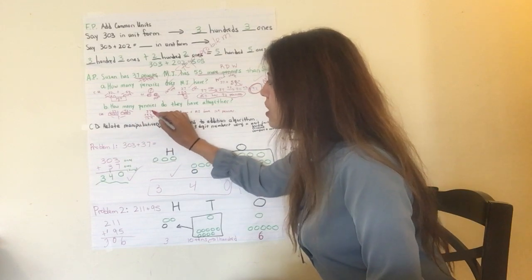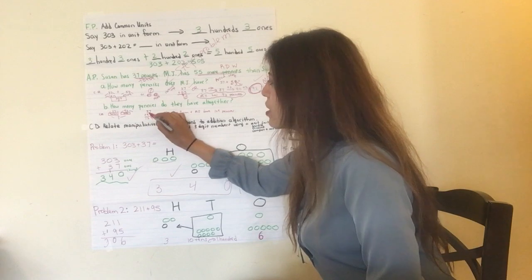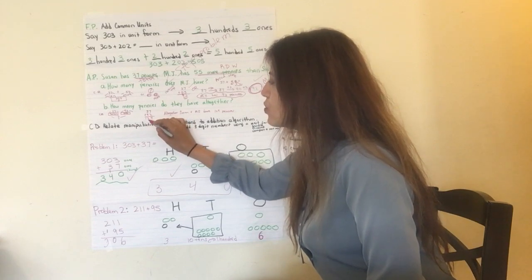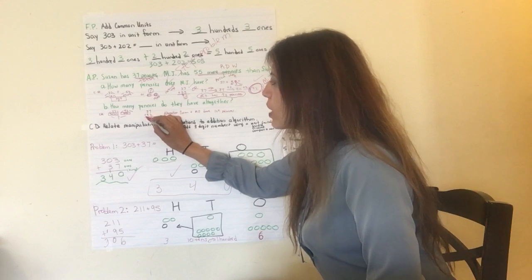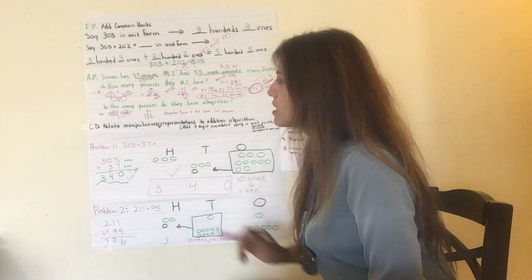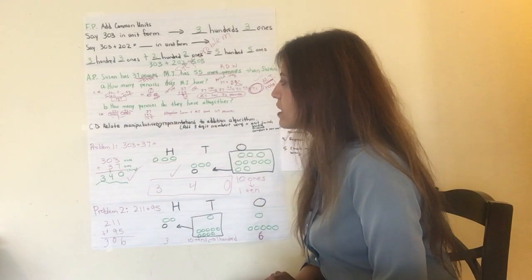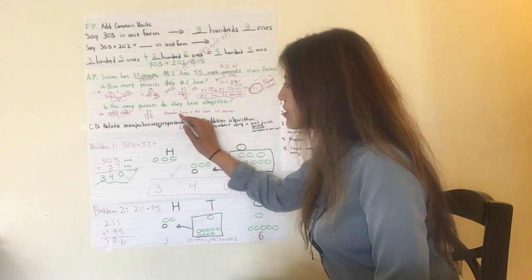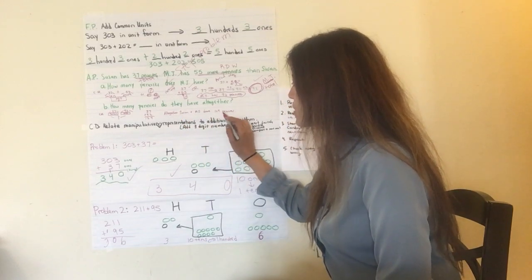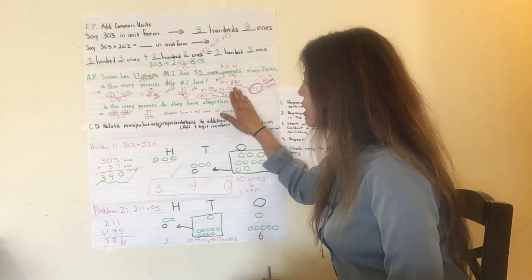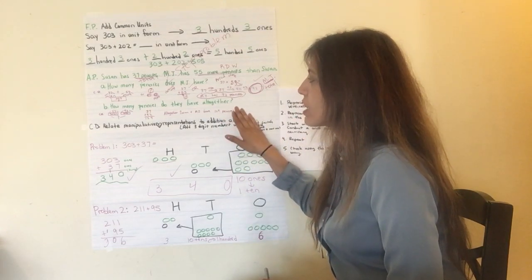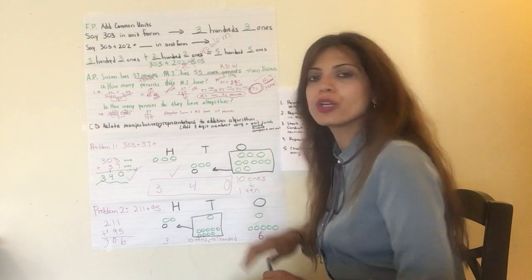37 plus 92. 7 ones plus 2 ones is 9 ones. Excellent job. 3 tens plus 9 tens gives you 12 tens. You keep the 2 tens here, you take the 100. 100 plus, and then 100, you bring it down. So, you have 129. 37 plus 92 equals 129. Altogether, Susan and MJ have 129 pennies. Did you just see what I did? Again, I use the read-draw-write strategy here. I also use the read-draw-write strategy here as well. Good job.